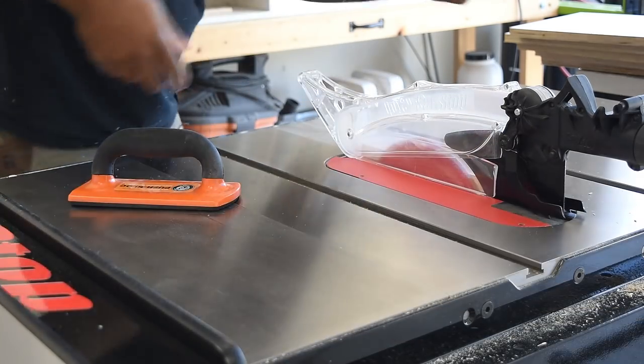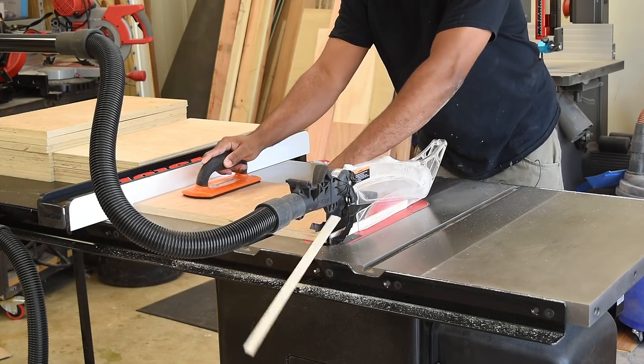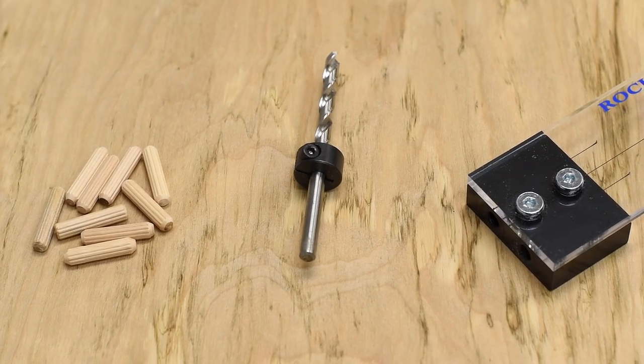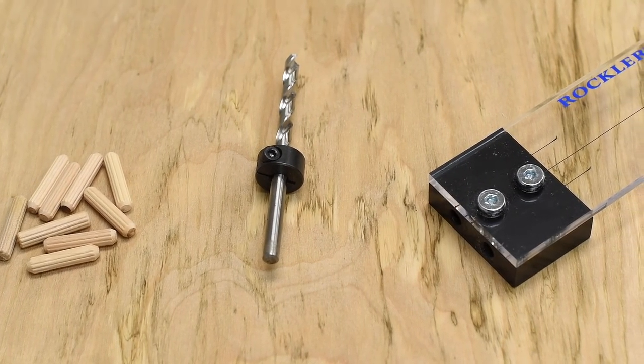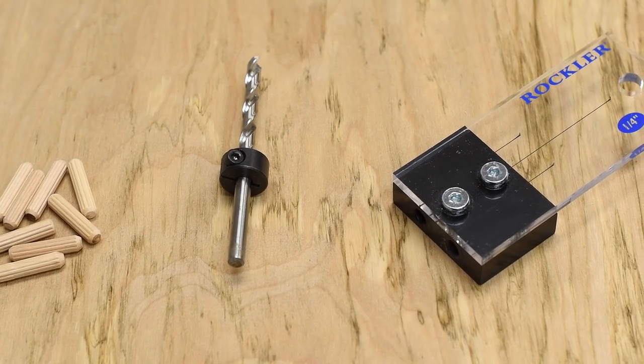Before we begin, I have all the parts cut and dimensioned down in the video description. These are going to be key components to building this: the dowels, the jig, the bit, wood glue, and a few hand tools.